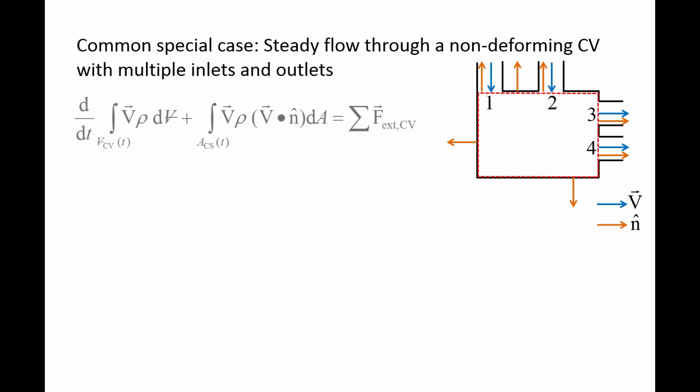We start with the vector form of the conservation of linear momentum equation for control volumes. Since the flow is steady, the term with the time derivative is equal to zero, indicating that the linear momentum in the control volume is constant in time. Also, since the control surface does not deform, we can remove the time dependence from the limits of integration. Notice that the remaining integral is over the entire control surface. We can break up the control surface into multiple sections and integrate over each of these sections individually.